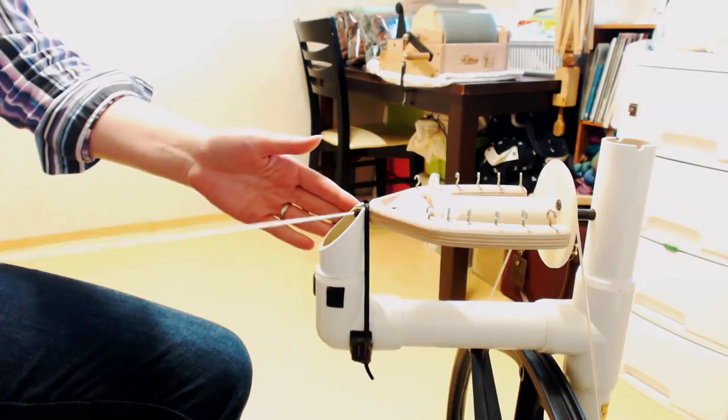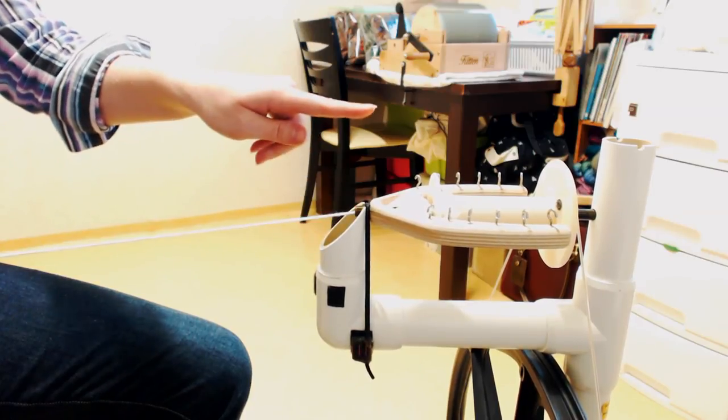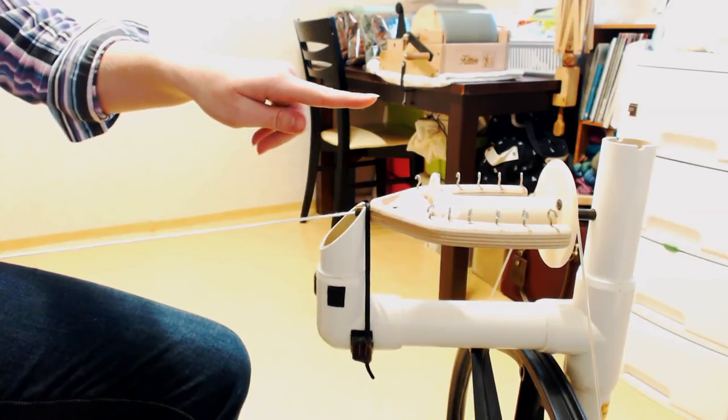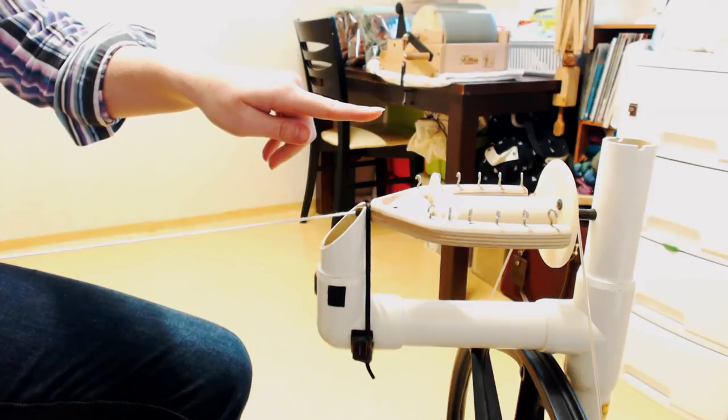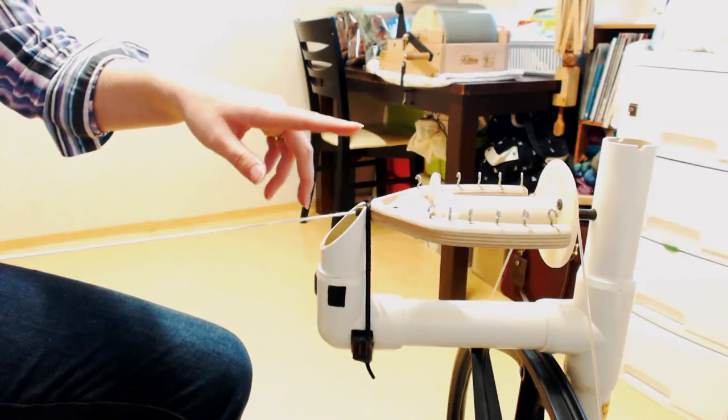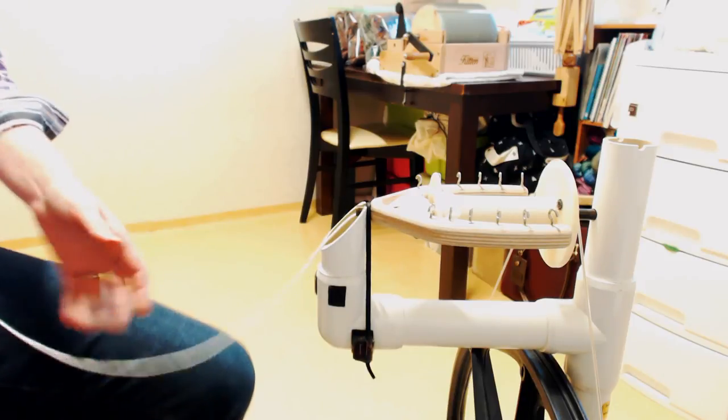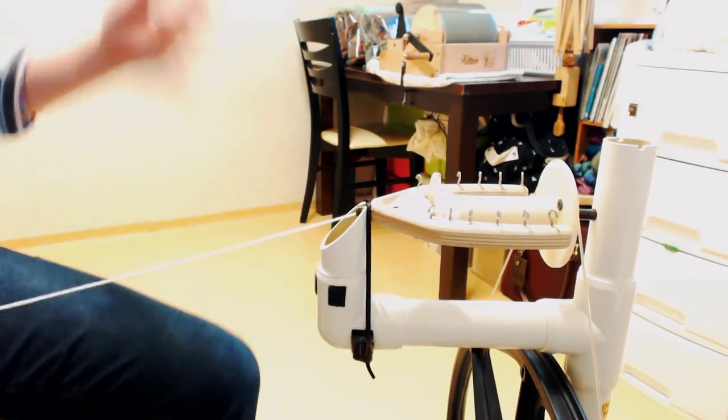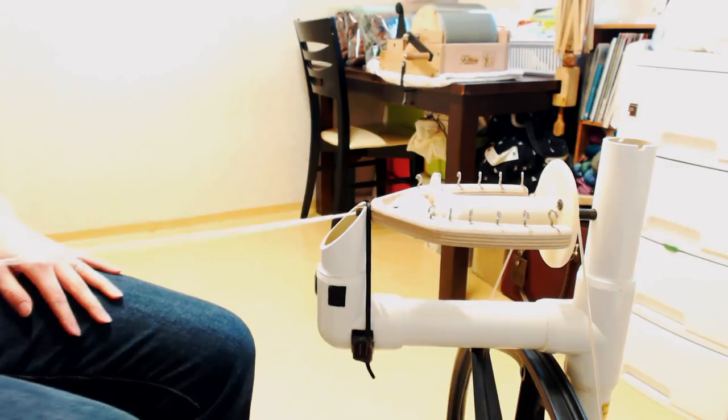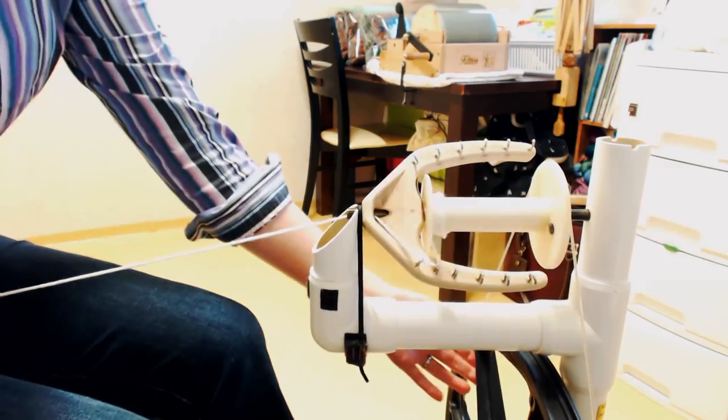My chair right now is actually for my Kromski Minstrel, which the orifice for that is about this much taller, so it's actually perfect for that wheel. It's a little bit uncomfortable for this wheel, but it doesn't really make too much of a difference for me. But I thought it would be a really good opportunity to talk about chairs or seating arrangement.